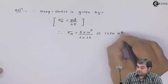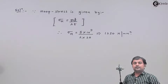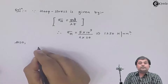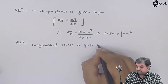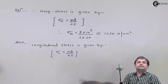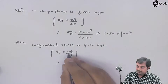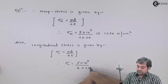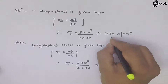Whenever they tell you to calculate hoop strain or longitudinal strain, first get the value of hoop stress and longitudinal stress. Also, longitudinal stress is given by pd / 4t, or longitudinal stress can directly be taken as half of hoop stress. Therefore, longitudinal stress = 5 × 1000 / (4 × 20) = 625 newton per mm square.